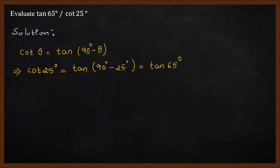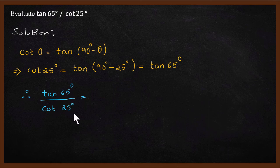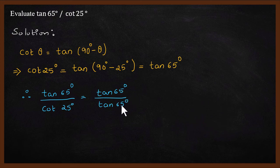Now if we substitute this in the original question, tan 65° divided by cot 25°, we can substitute cot 25° with tan 65°, giving us tan 65° by tan 65°, which equals 1.